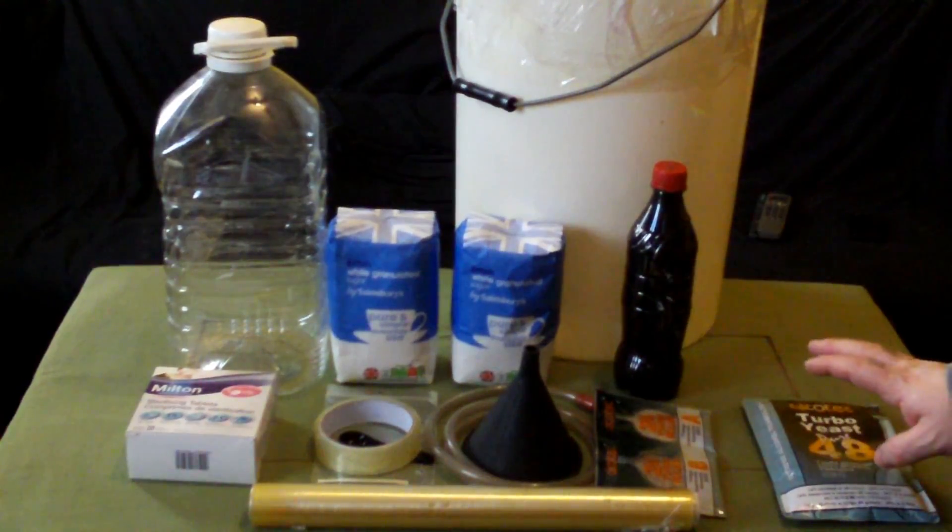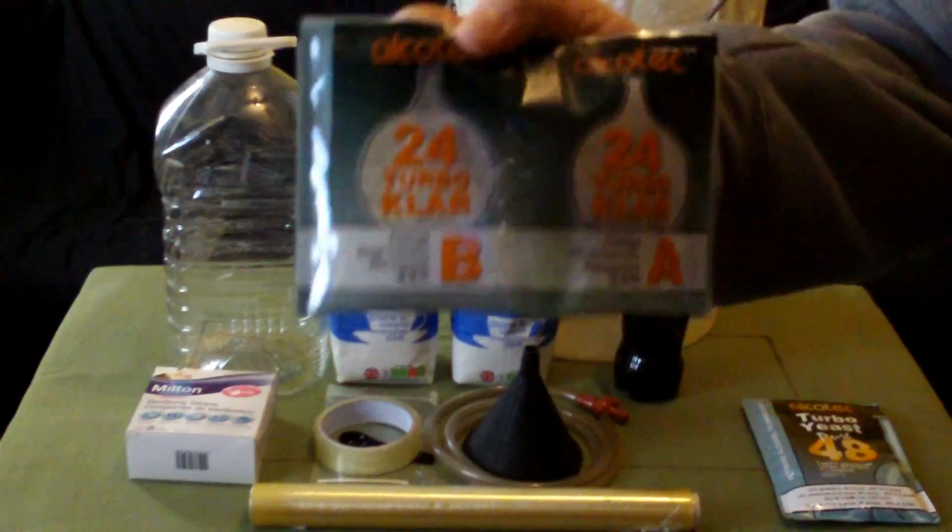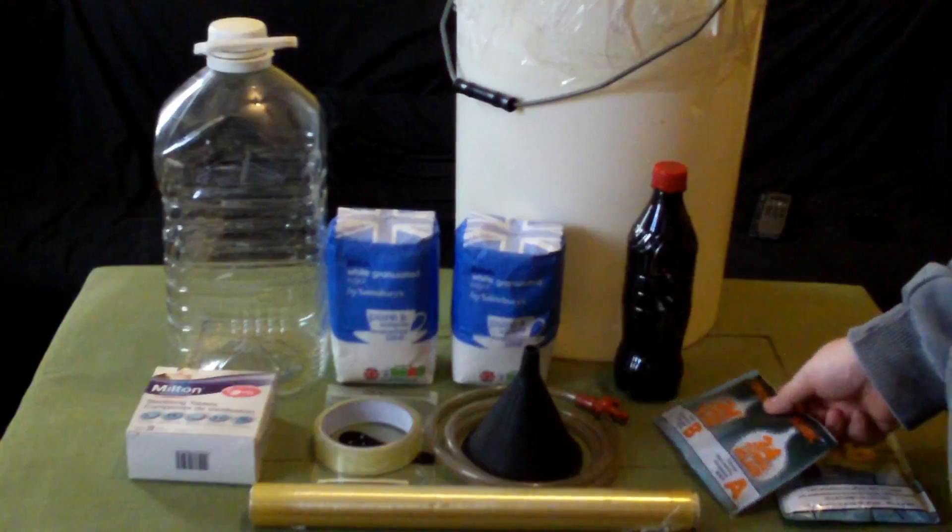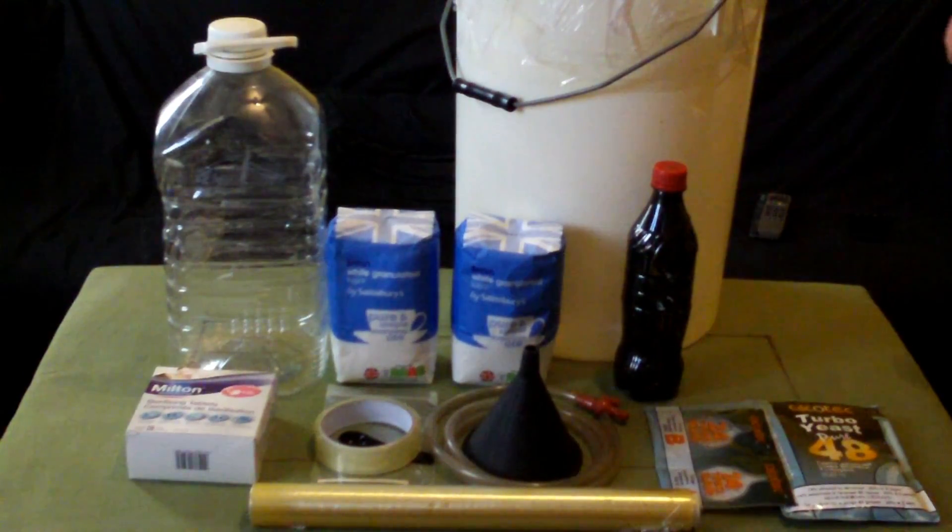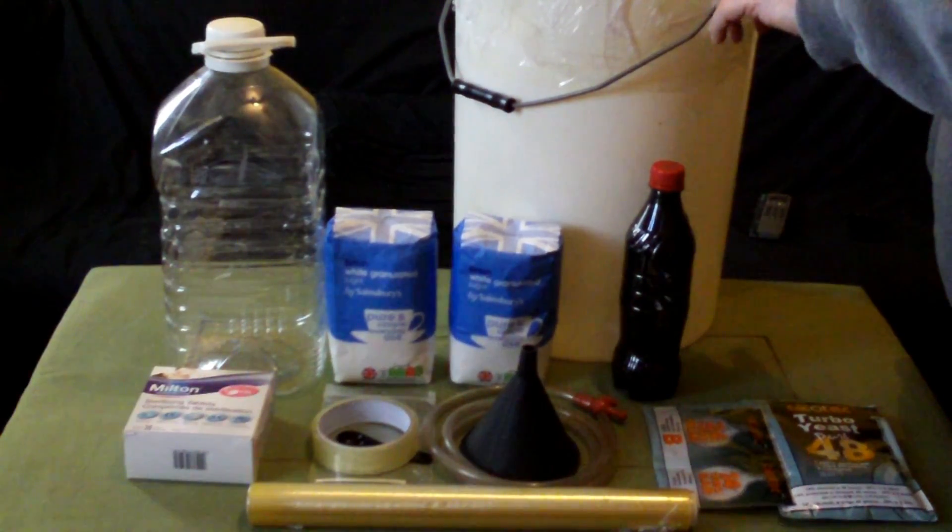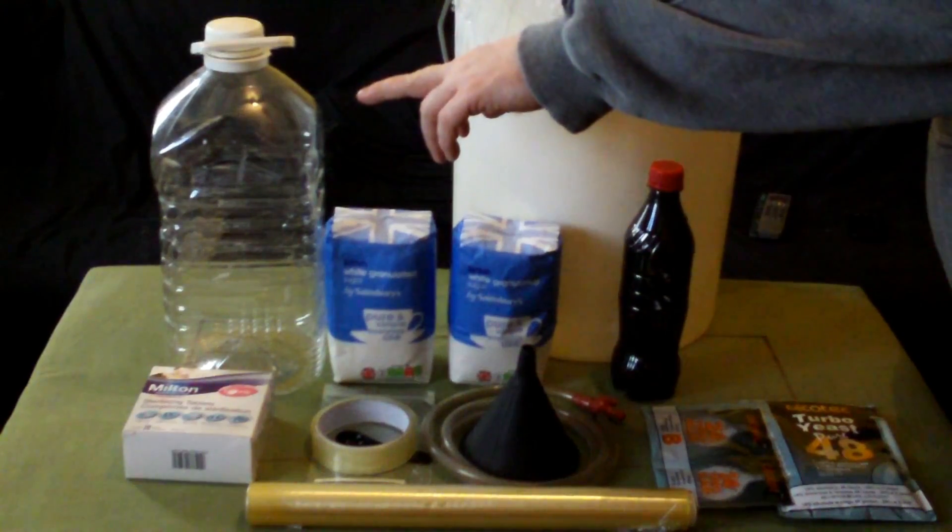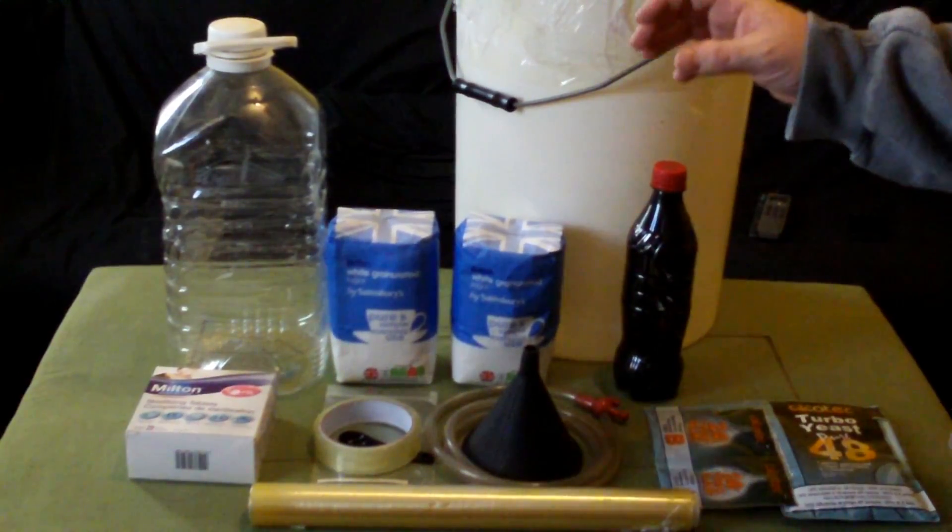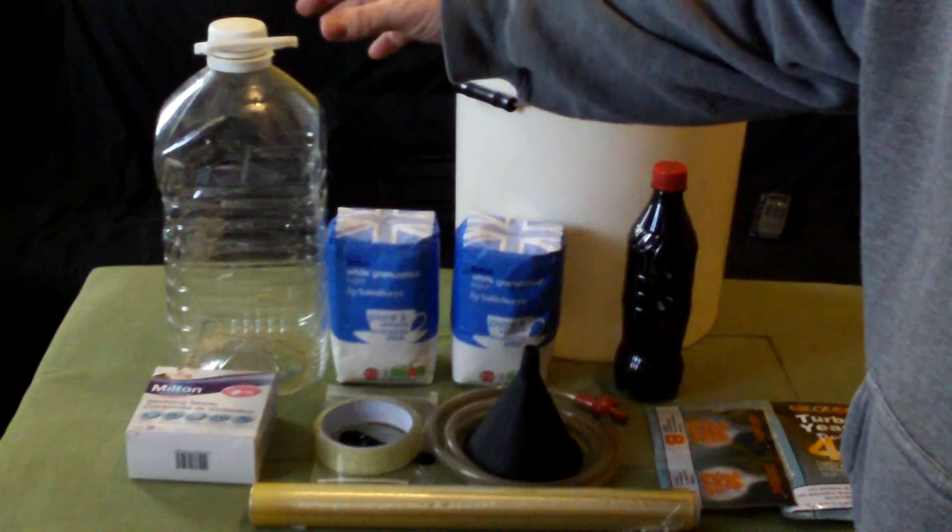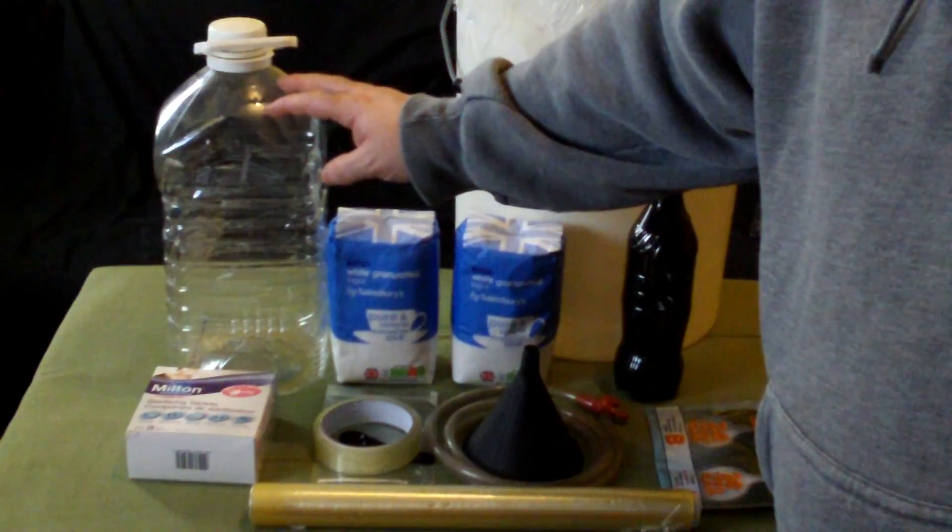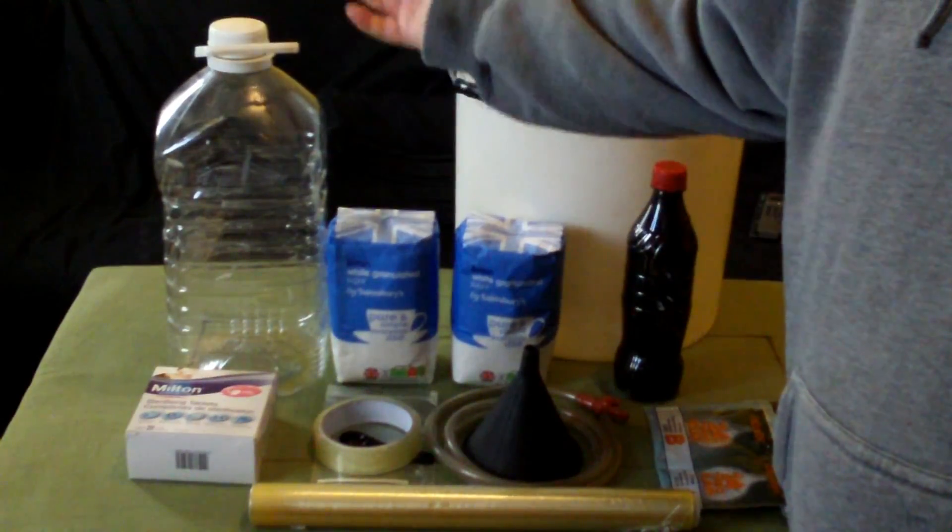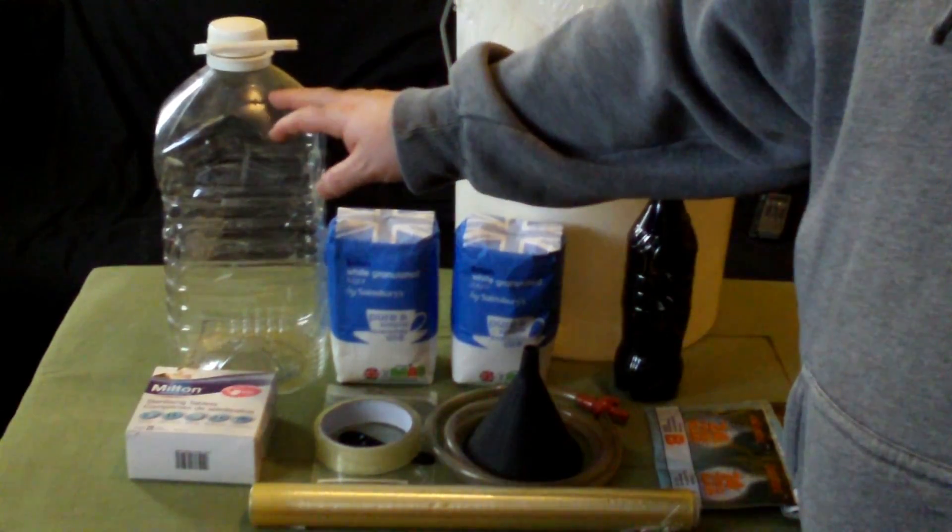So you want the yeast, the stuff to do the clearing which is a double sachet. You want something to put your bottle in because this is such a quick way of fermenting you don't use an airlock. You have to have a bottle that doesn't have a lid on it and it's definitely going to overspill. So you need something to put that bottle in.